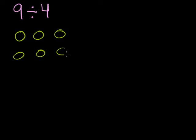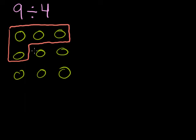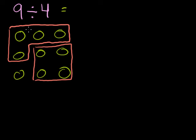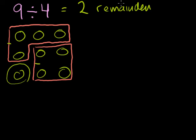Let's do an interesting one: nine divided by four. Let me draw nine objects: one, two, three, four, five, six, seven, eight, nine. Dividing into groups of four — here is one group of four, and here's another group of four. Then I have this leftover item — I can't put it into a group of four. Nine divided by four gives two groups, with a remainder of one. Nine divided by four is two, remainder one.